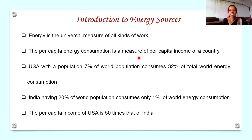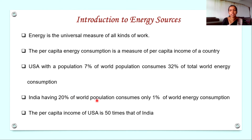So let us check this fact by considering India and USA as examples. If you consider USA, their population is only about 7% of the total world population, but their energy consumption is 32% of the total world energy consumption. Whereas India, which has 20% of the world's population, consumes only 1% of the total world energy consumption. America is consuming more energy — more industries, more R&D activities — so their income is also very high. The per capita income of USA is 50 times more than that of India.